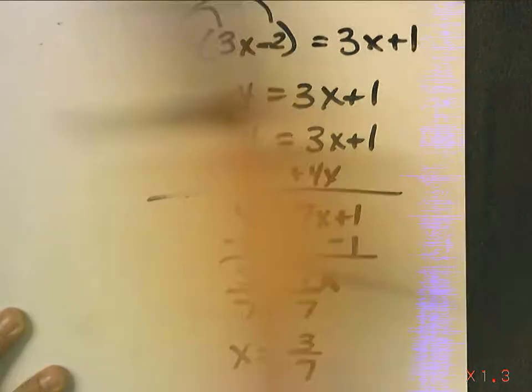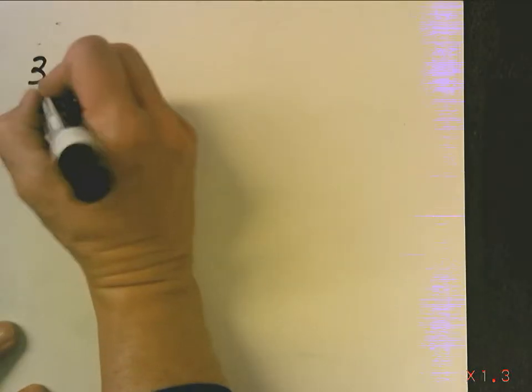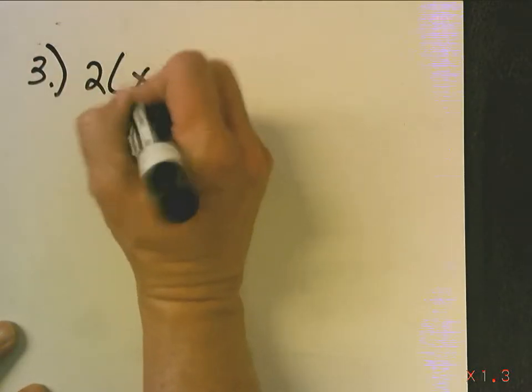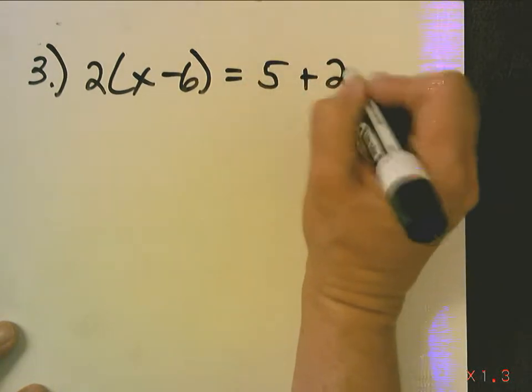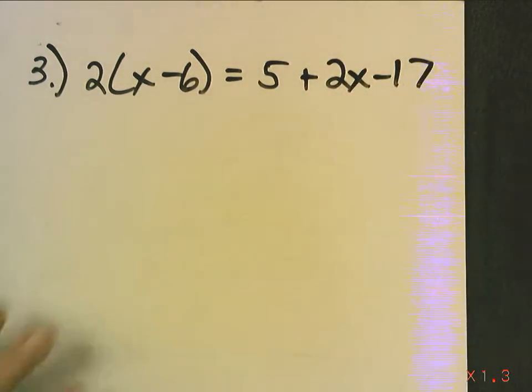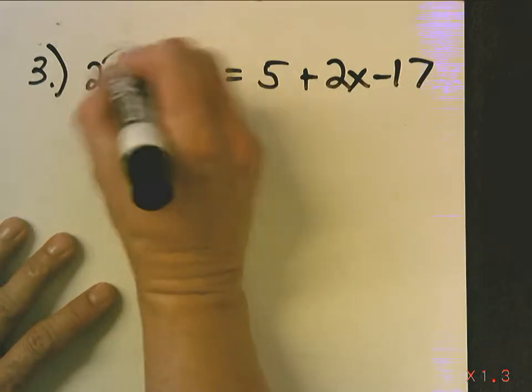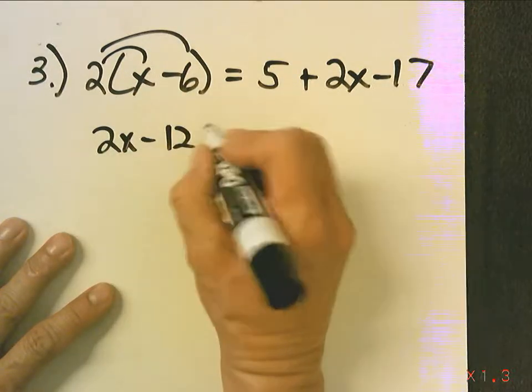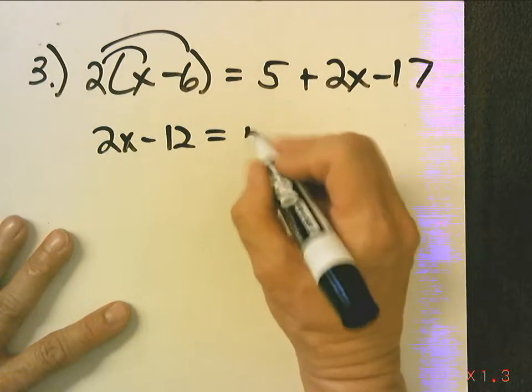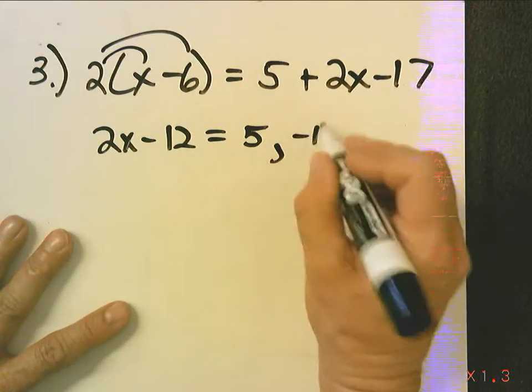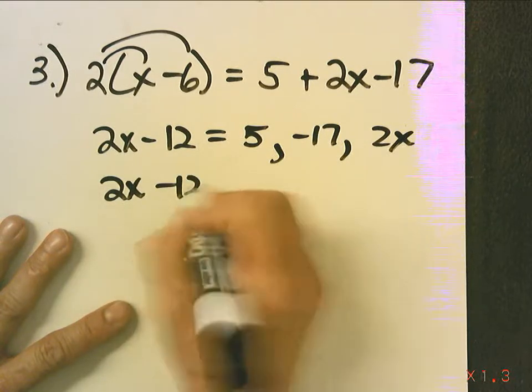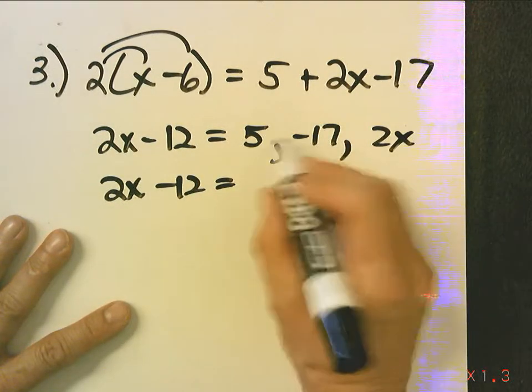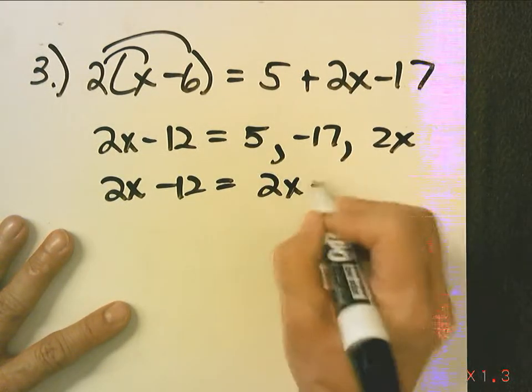Now, we're going to do number 3. For number 3, 2x minus 6 equals 5 plus 2x minus 17. First, I'm going to distribute. I get 2x minus 12 equals, now I'm going to combine my 5 and negative 17 and 2x. So, 2x minus 12 equals, that becomes negative 12, 2x minus 12.